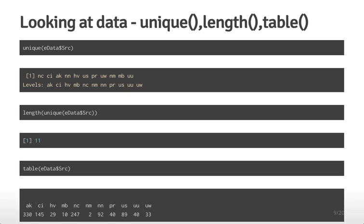The next step is to look at actual values for different variables. Two very useful functions are unique() and length(). For qualitative variables that only take a certain number of unique values, unique() lists all the values that variable takes. Applied to the source variable, it shows all values. You can also check the length of the unique values — length(unique(edata$source)) tells us there are 11 unique values for source, a quick way to verify you have the expected number of categories.